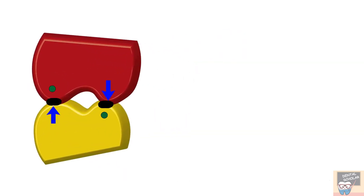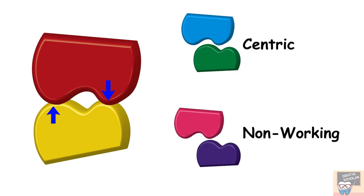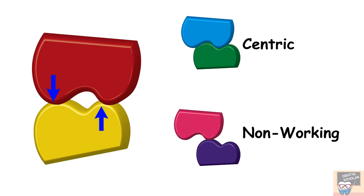Now let's see the working side interference. As explained, in working side contact the contact is between the opposing supporting and guiding cusps. The arrows represent the supporting cusps and the dot represents the guiding cusp; the shaded area represents the possible site of interference. We can either reduce the supporting cusp or the guiding cusp. If we reduce the supporting cusp, the working interference is reduced but it leads to opening of contact in both centric and non-working contacts. So instead, we reduce the guiding cusp. Reducing the guiding cusp removes the interference in working side contact, and since the guiding cusps do not participate in centric or non-working contacts, those positions are not affected.